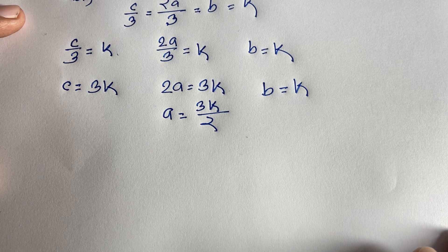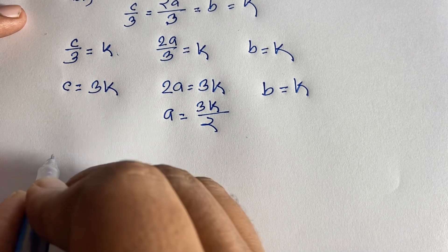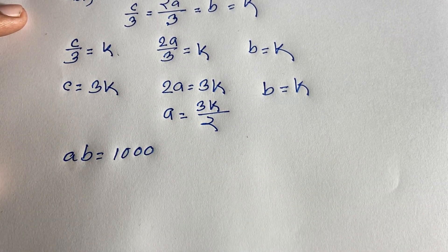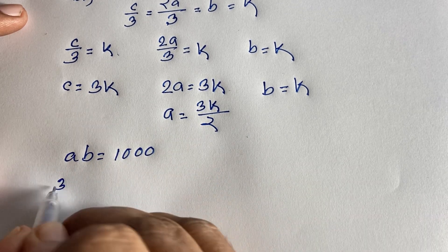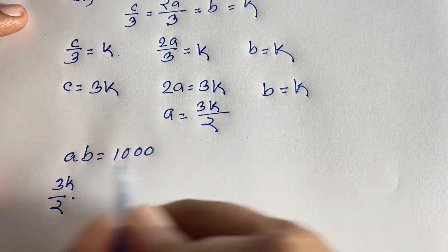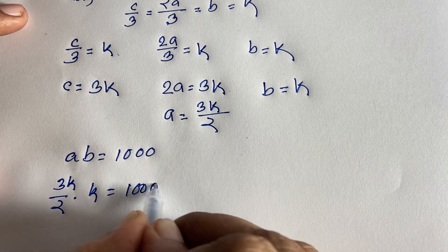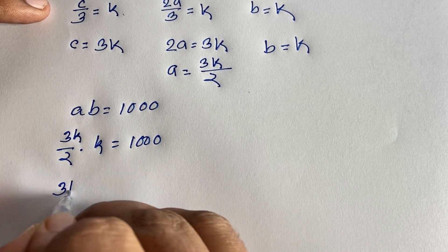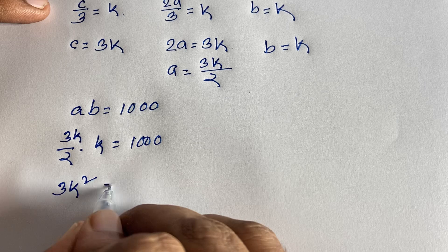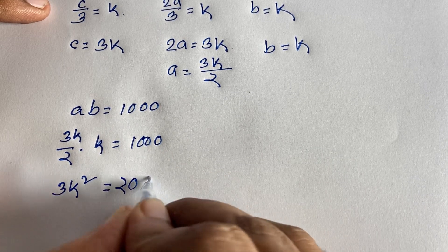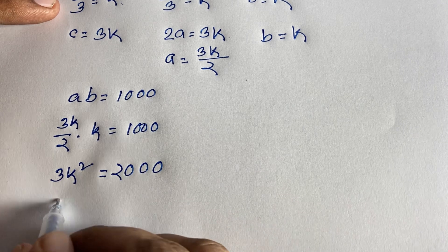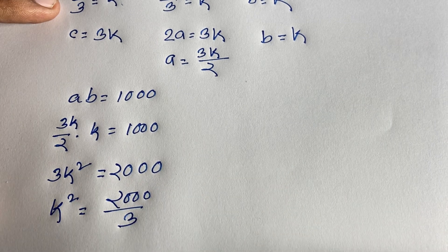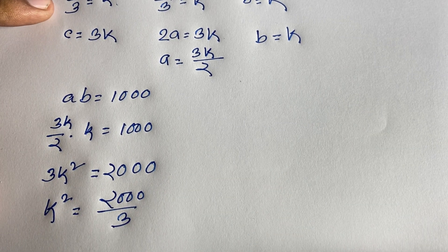Now we find the value of k using our first equation a·v = 1000. Substituting a = 3k/2 and v = k: (3k/2)·k = 1000, which gives 3k²/2 = 1000, so 3k² = 2000, and therefore k² = 2000/3.